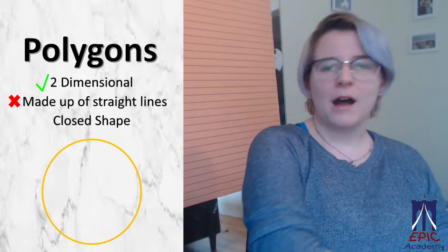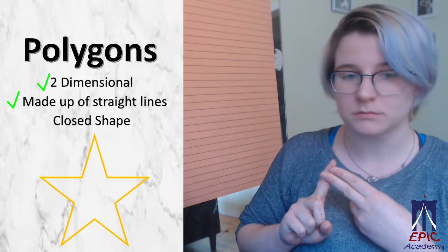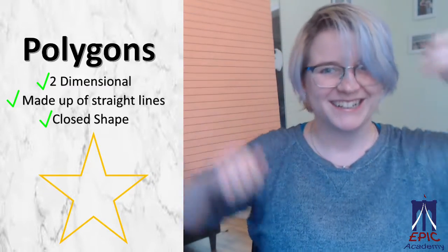What about this? Ooh. Okay. It is two-dimensional. It is made out of straight lines. And it's a closed shape. It's a polygon. Yeah. Cool.